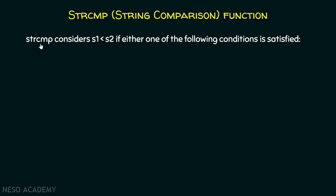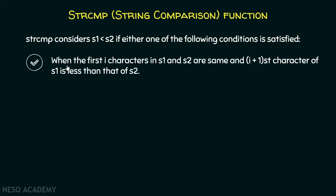strcmp considers s1 less than s2 if either one of the following conditions is satisfied. The first condition is when the first i characters in s1 and s2 are the same, and the i+1-th character of s1 is less than that of s2.